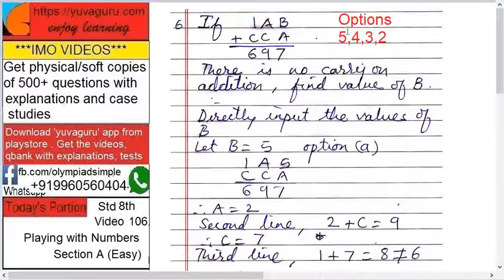So let's try with B equals to 5 because that's the only easiest way. B equals to 5, so what happens? 1A5 plus CCA equals to 697. So 5 plus A equals to 7, A becomes 2.